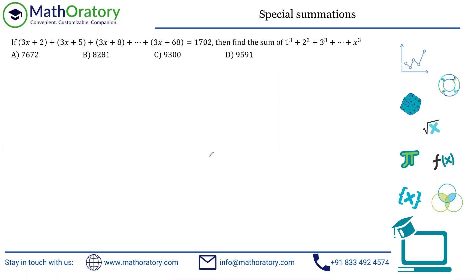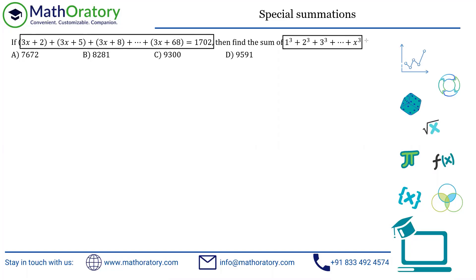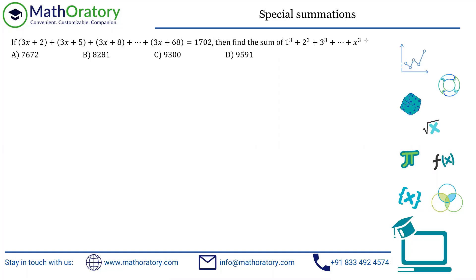Question 3: We have an expression given to us and we are looking for the sum 1³ + 2³ + ... + X³. Since there are integral answer options and X must be a natural number, let me analyze the left-hand side expression.